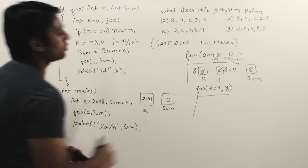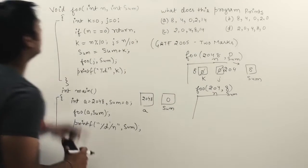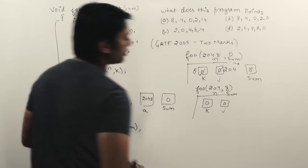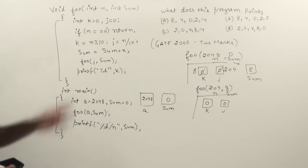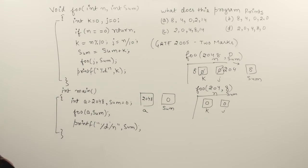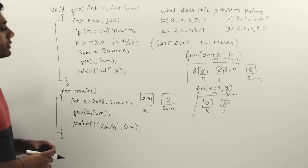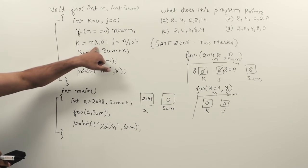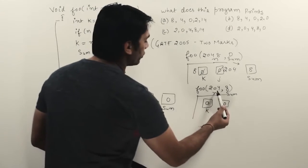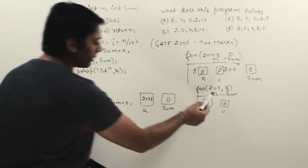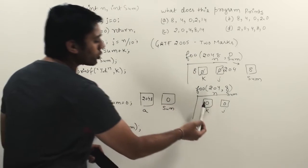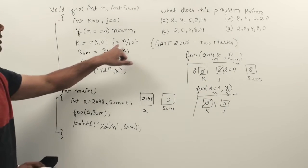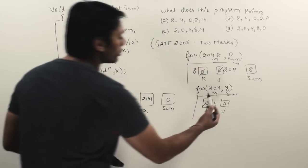In this second call, new variables k and j are created, both initialized to zero — these are not static variables. The value of n is 204, which is not equal to zero. So k = n % 10 = 204 % 10 = 4, and j = 204 / 10, which stores 20 as an integer.